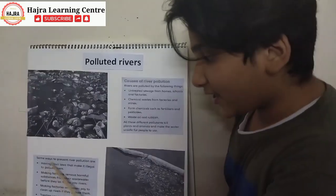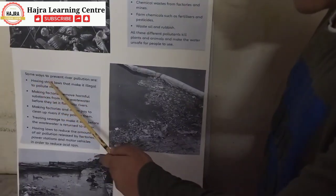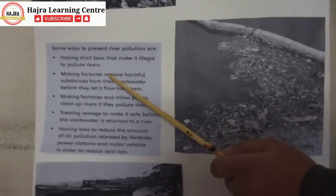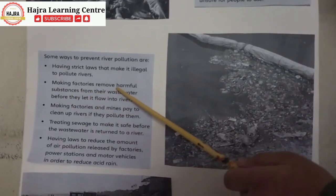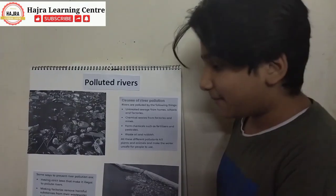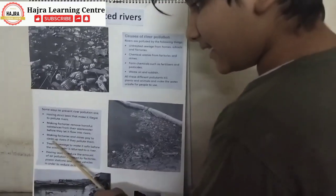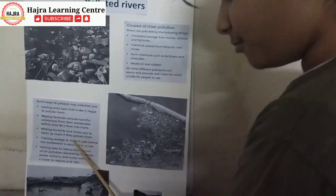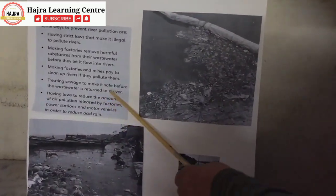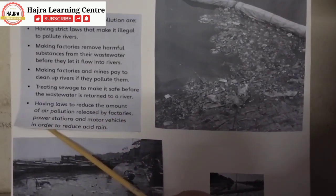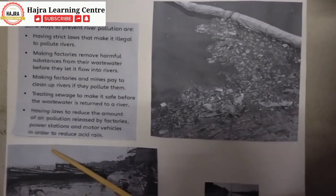Some ways to prevent river pollution include: having strict laws that make it illegal to pollute rivers; making factories remove harmful substances from their wastewater before it flows into rivers; making factories and mines pay to clean up rivers if they pollute them; treating sewage to make it safe before the wastewater is returned to a river; having laws to reduce the amount of air pollution released by factories, power stations, and motor vehicles in order to reduce acid rain. Thank you.